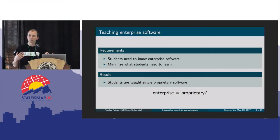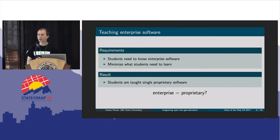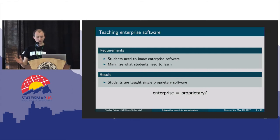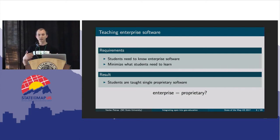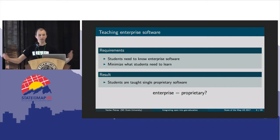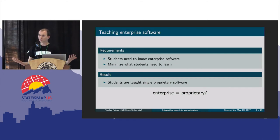What it comes down to is teaching. We have to teach the students and learn ourselves. Very often there are requirements: students need to know some enterprise software, and at the same time we want to minimize what students actually have to learn to become experts in the field. The result of these two requirements is that students are taught a single proprietary software in whatever field they are in. There is this assumption that enterprise and proprietary are the same thing — if you want to teach enterprise software, you need to teach proprietary software. That's not a correct assumption, but very often it's there.